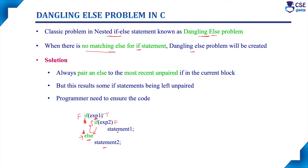The actual solution given by programmers is: always pair an else to the most recent unpaired if in the current block. But this will not work if a statement is left unpaired, as in this example. So the programmer needs to ensure that while writing code for nested if statements, they confirm which if statement corresponds to which particular else statement.